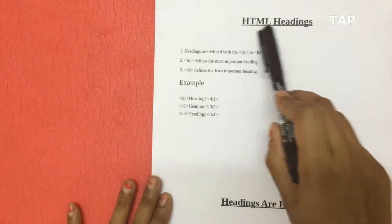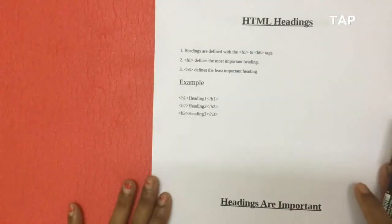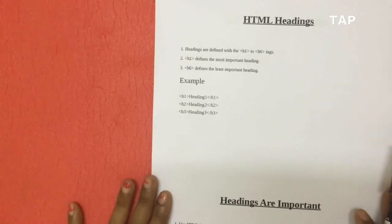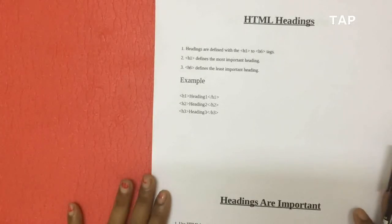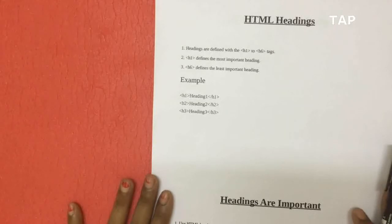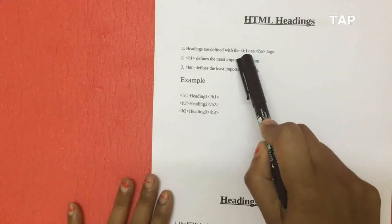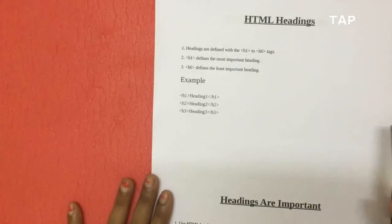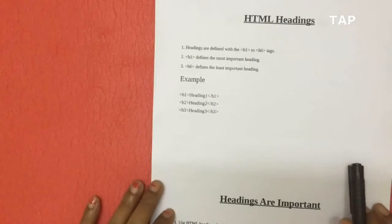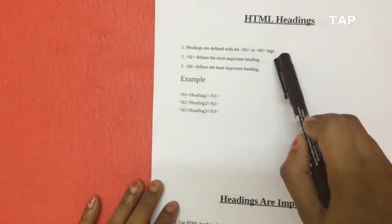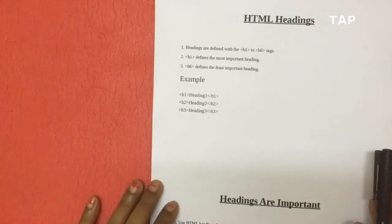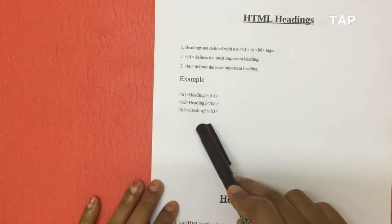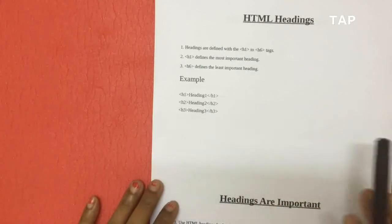We'll see HTML headings first. As I already told in my previous tutorials, inside your body you can write these headings. There are six types of headings: h1, h2, h3, and so on till h6.